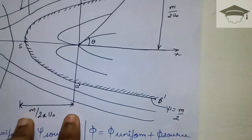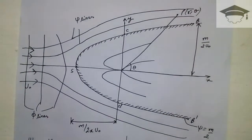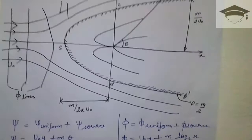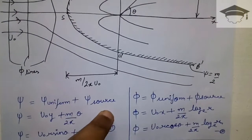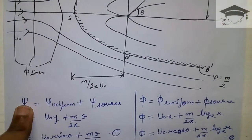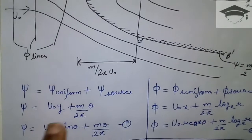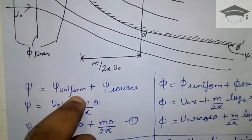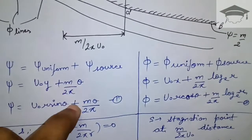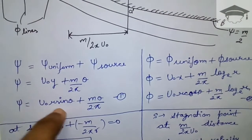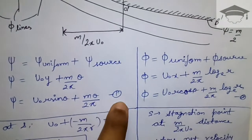ξ equals ξ_uniform plus ξ_source, because the Rankine Half Body is formed from the combination of uniform flow plus source flow. So ξ = u₀y + mθ/(2π). Since y = r sinθ, we get ξ = u₀r sinθ + mθ/(2π) — equation number one. Similarly, the equipotential lines: φ = φ_uniform + φ_source = u₀x + (m/2π) logₑ r = u₀r cosθ + (m/2π) ln r — equation number two.